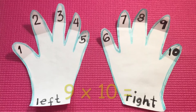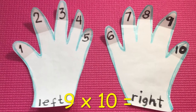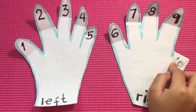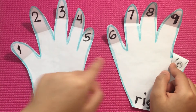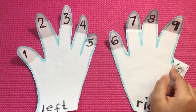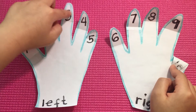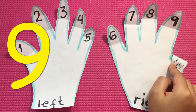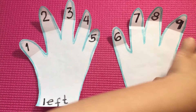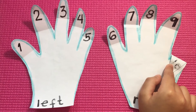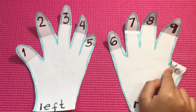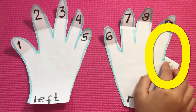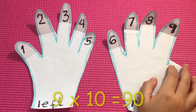It's cool, right? Now let's do the last and final question: 9 times 10. Let's fold finger number 10. How many fingers do you see on the left of the folded finger? Let's count: 1, 2, 3, 4, 5, 6, 7, 8, 9. That means there are 9 tens. How many fingers on the right? Let's count. There are no fingers on the right, so that means there are 0 ones. So 9 times 10 is 90.